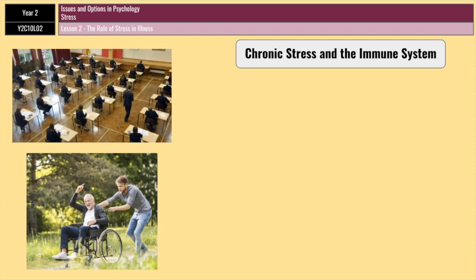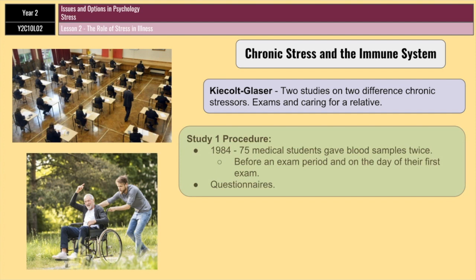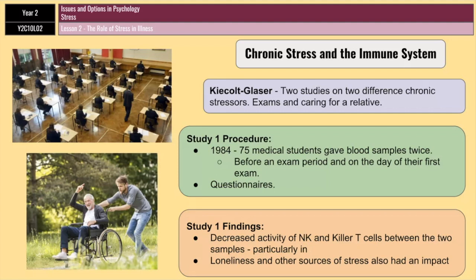We're going to look at research by Kiecolt-Glaser, who investigated the effect of two long-term stressors: preparing for exams and looking after ill relatives. In the first study — Kiecolt-Glaser et al. 1984 — they looked at 75 medical students who gave blood samples twice: one month before an exam period (low stress) and on the day of the first exam (high stress). They also completed questionnaires measuring sources of stress and self-reported psychological symptoms. Findings showed that the activity of natural killer and killer T cells decreased between the first and second samples — evidence of immune suppression by a common stressor. This decline was most apparent in students who reported feeling lonely and those experiencing other sources of stress.